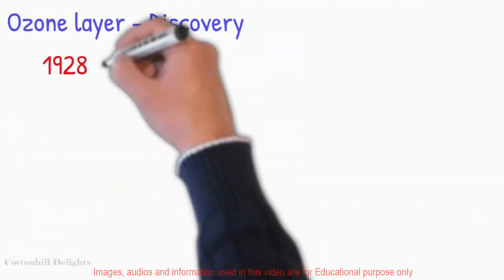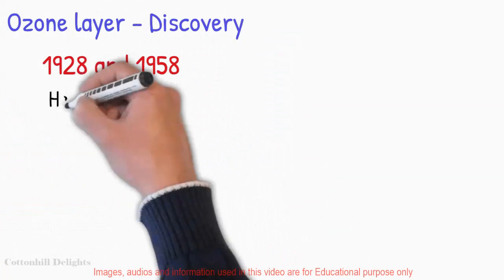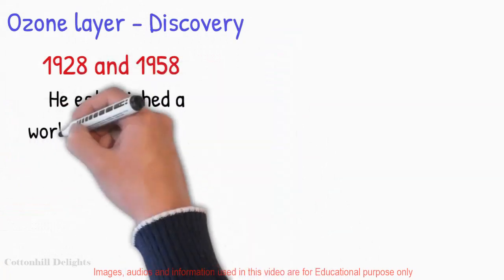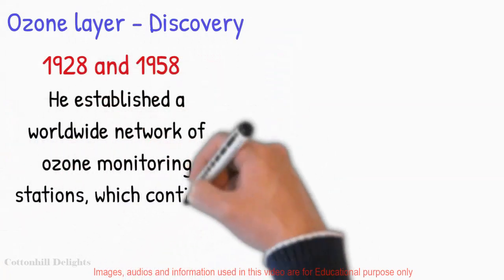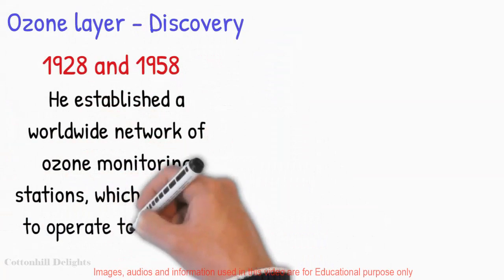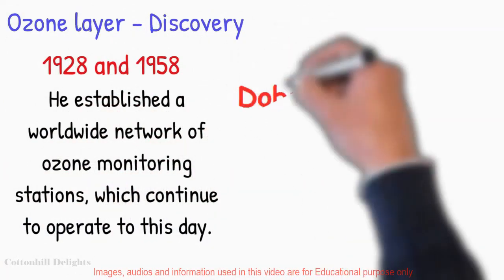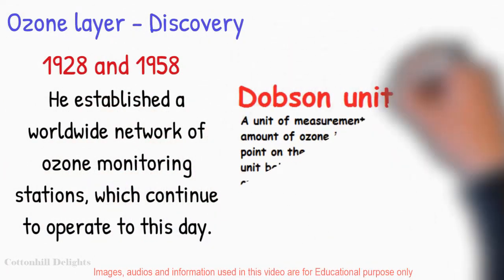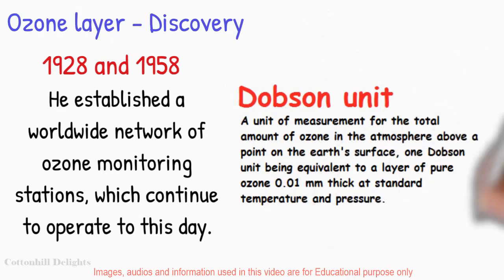Between 1928 and 1958, Dobson established a worldwide network of ozone monitoring stations, which continue to operate to this day. The Dobson unit, a convenient measure of the amount of ozone overhead, is named in his honor.